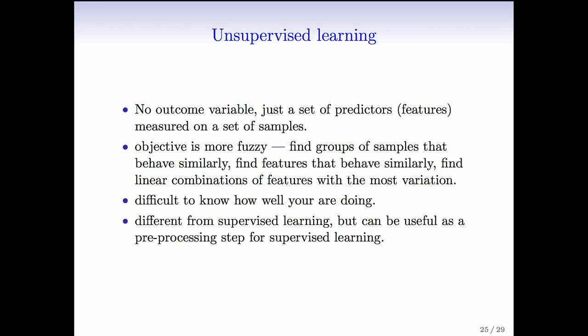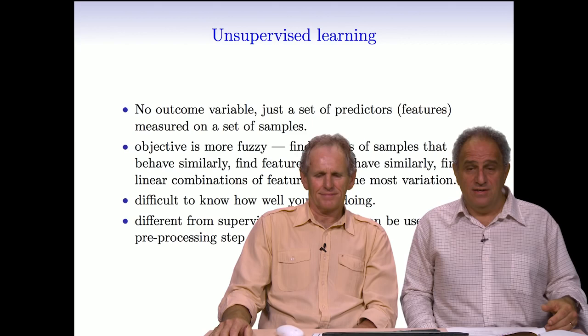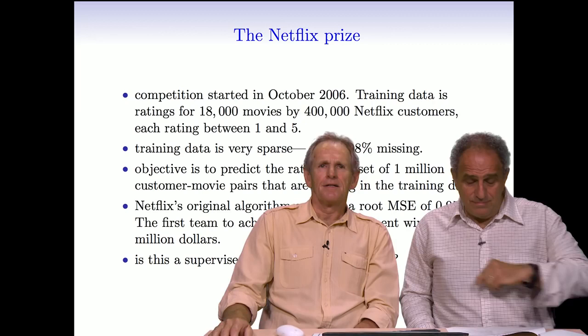It's a lot more common to collect unlabeled data. For example, on the web, a computer algorithm can just scan and grab movie reviews. But figuring out whether a review is positive or negative often takes human intervention. So it's much harder and costly to label data, but much easier to collect unlabeled data.